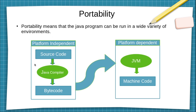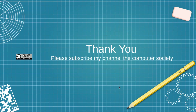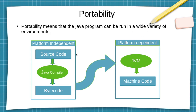Java splits the whole compilation process into two separate parts: a platform-independent part and a platform-dependent part. In the platform-independent part, we write the same source code and the Java compiler converts it to the same bytecode. Every platform has its own JVM installed, and the JVM takes this bytecode and converts it into that particular platform's machine code.